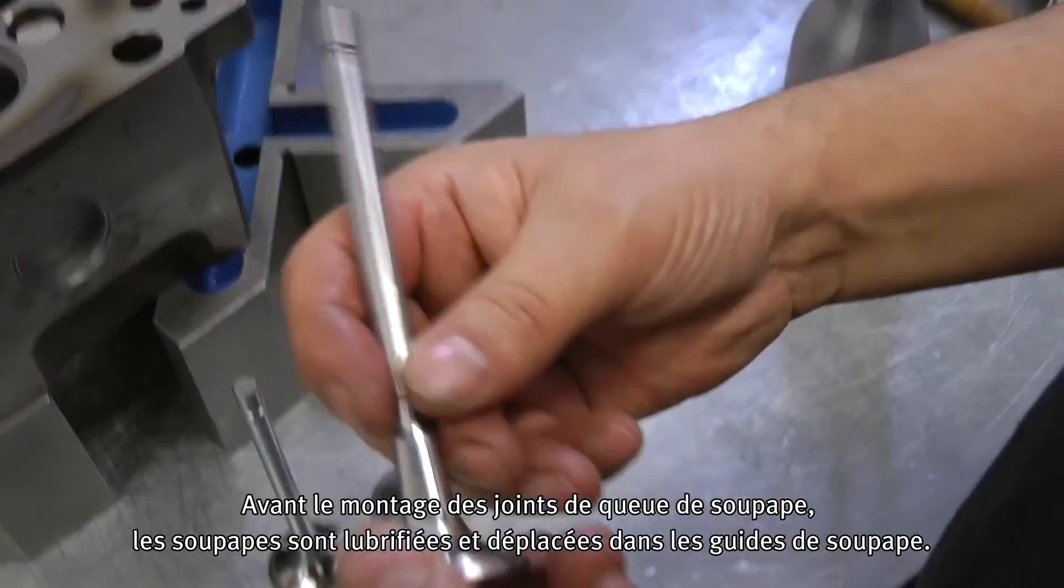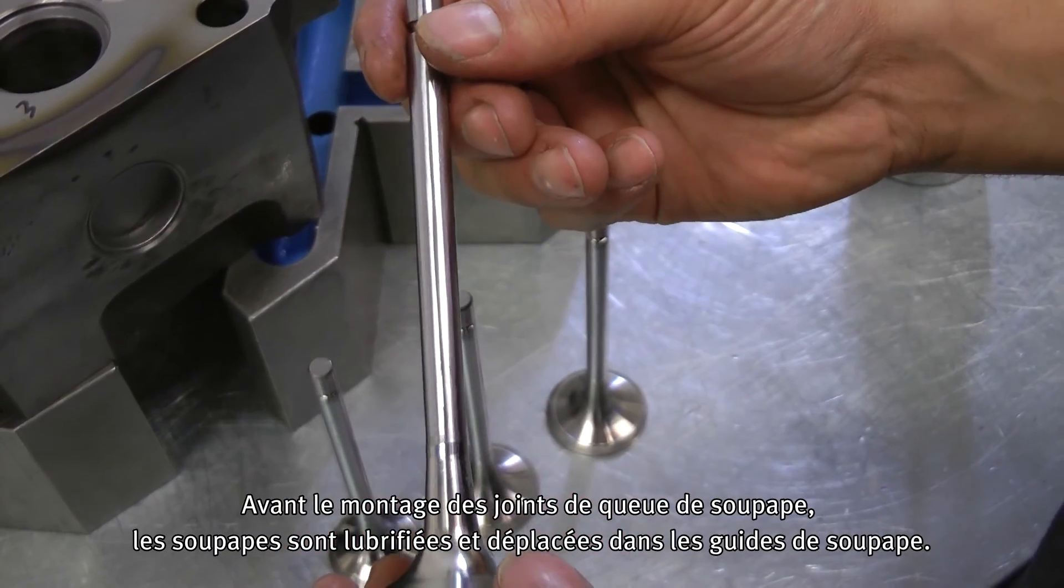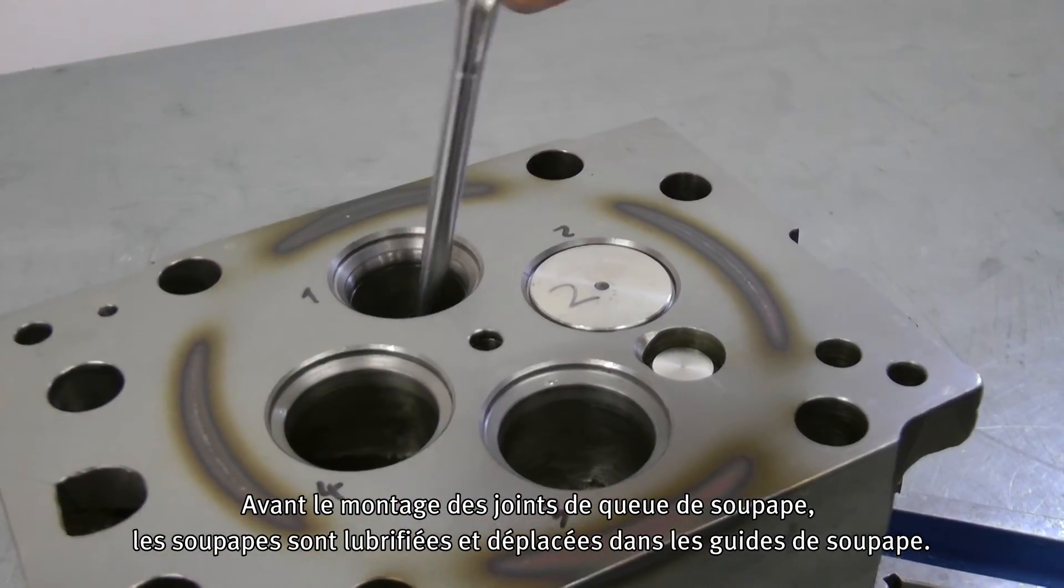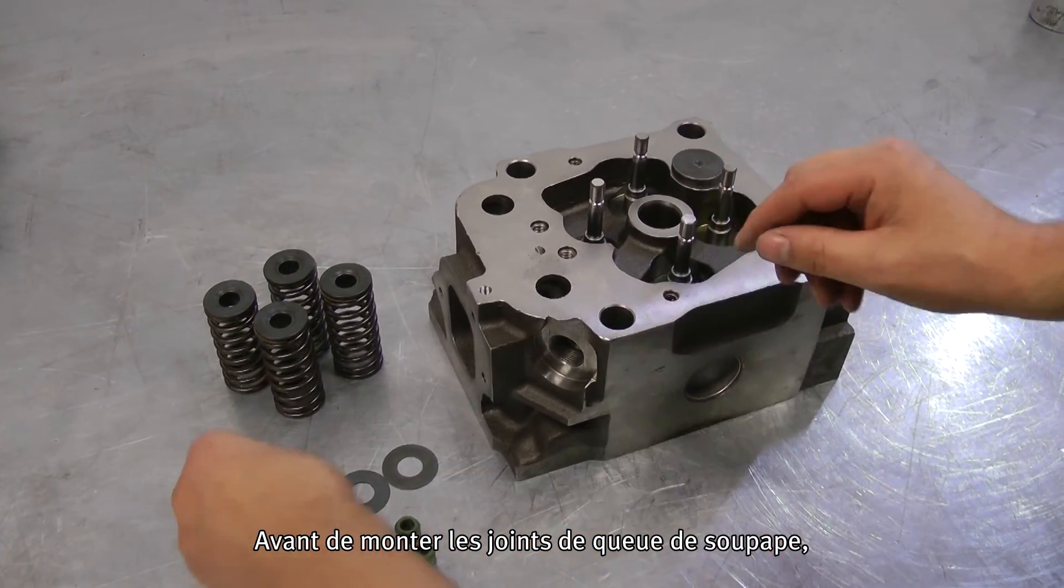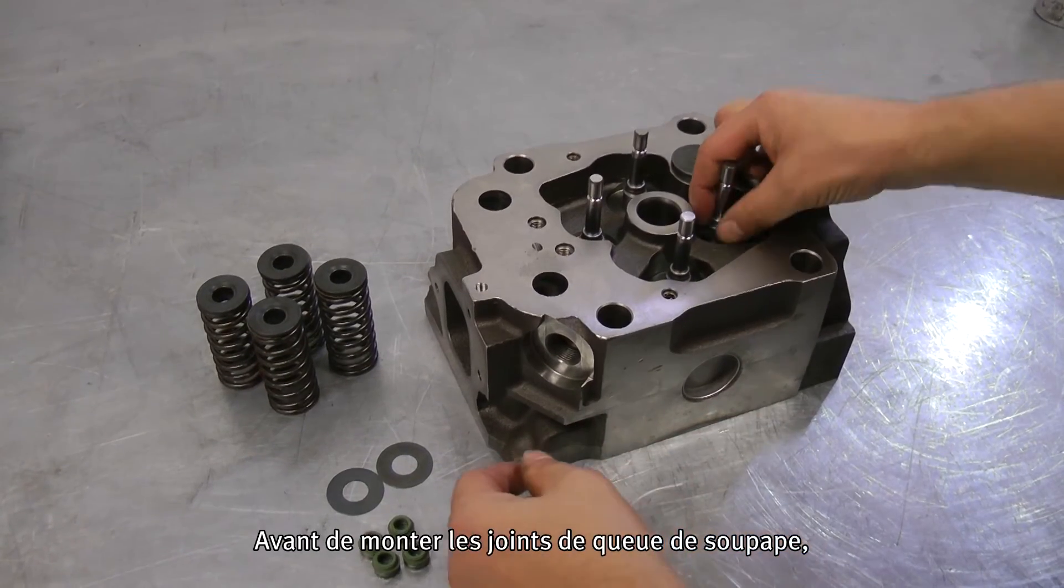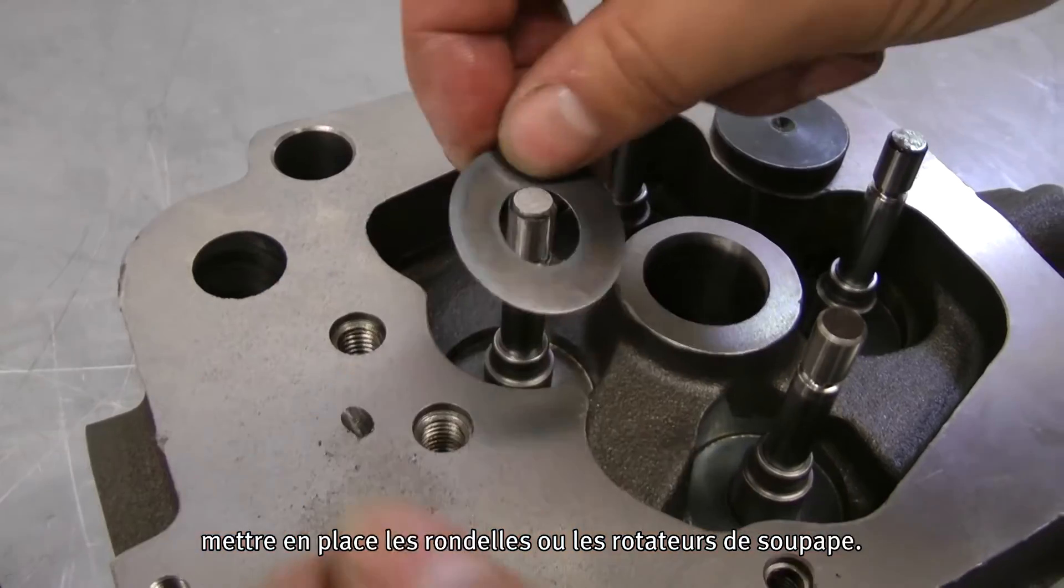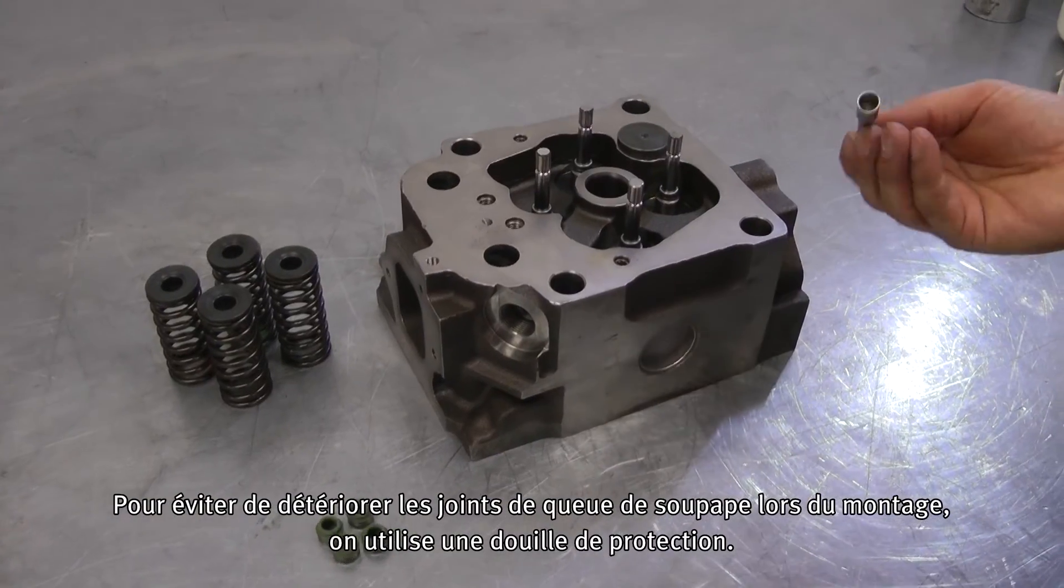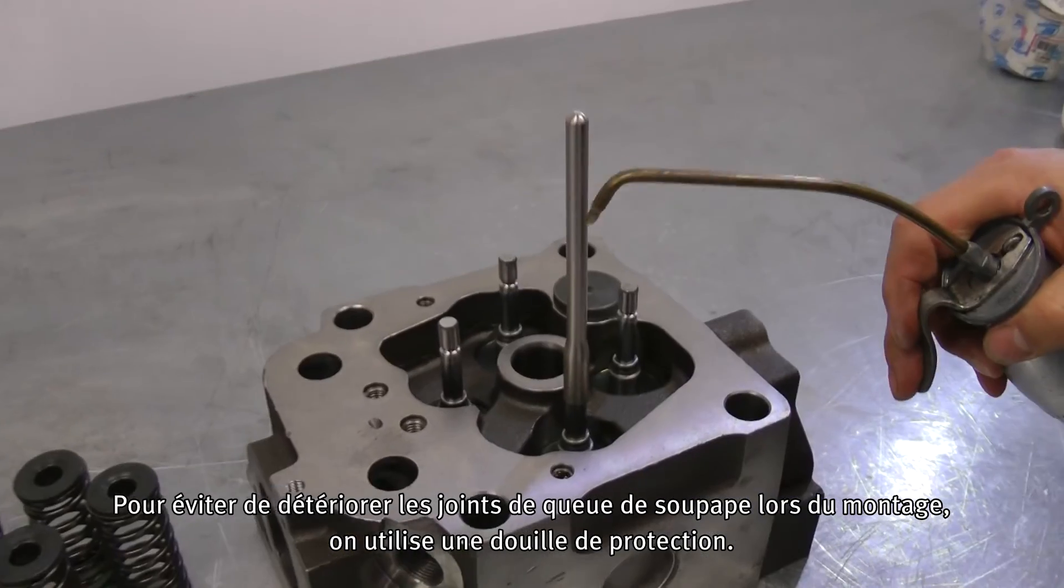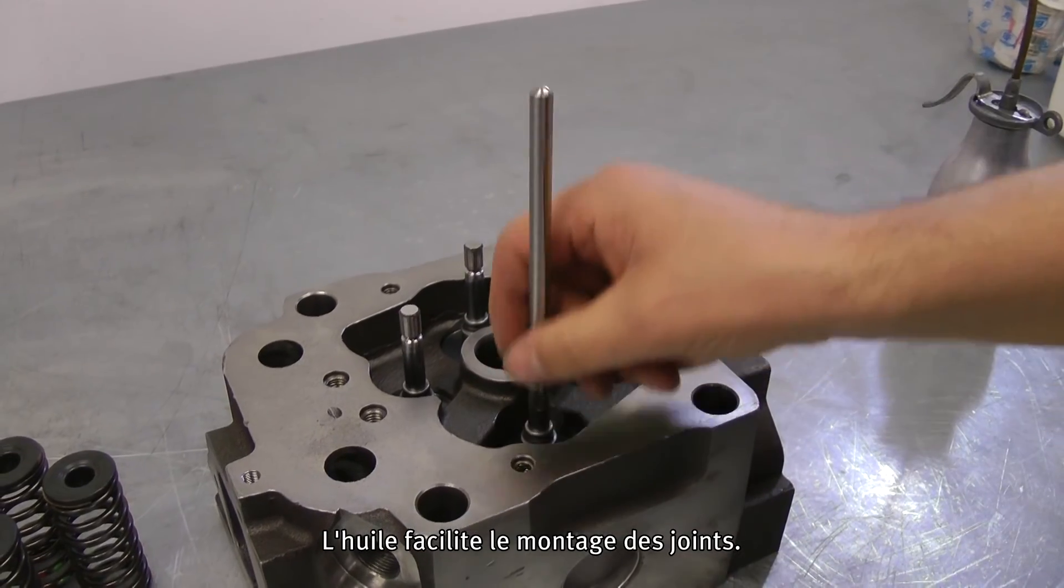Before assembling the valve stem seals, the valves are oiled and moved into the valve guides. The washers or valve rotators must be inserted before the valve stem seals are assembled. For the valve stem seals not to get damaged during assembly, a protective bushing is used. Oil facilitates assembly of the seals.